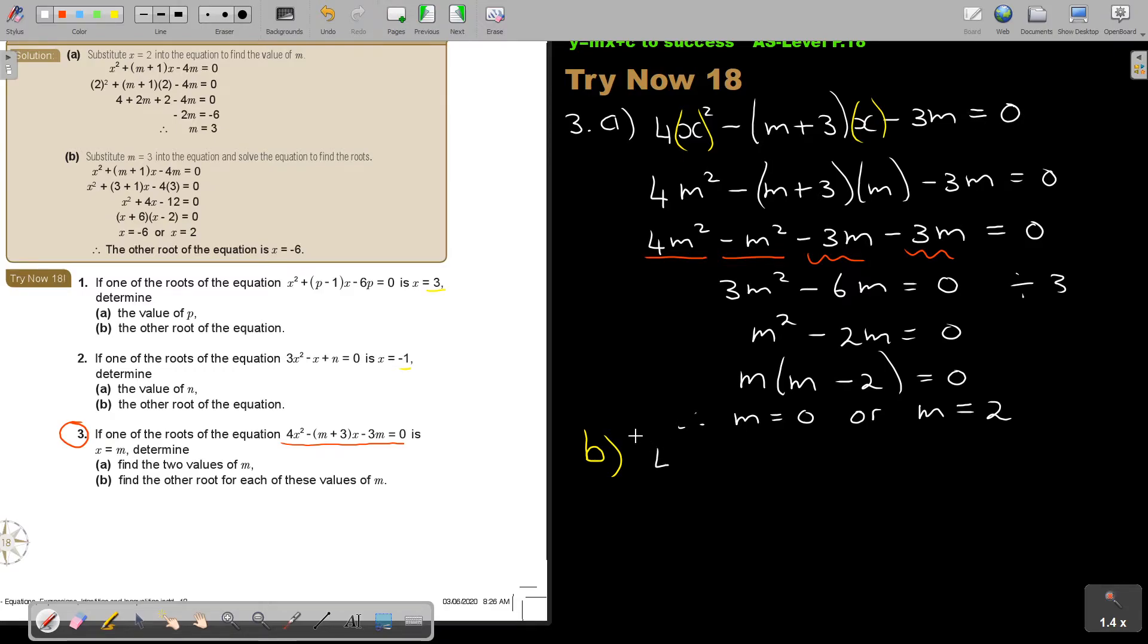So I'm just going to put in m now. So let's first put 0. So it's going to be 4 x squared minus 0 plus 3 x minus 3 times 0 is equal to 0. So 4 x squared minus 3 x and this is going to just be 0. So it's equal to 0. So I can again go and I take out x as a common factor. So it's going to be x times 4 x minus 3 equals 0. So therefore x is equal to 0 or 4 x equals to 3. So x is equal to 3 quarters. So if m equals 0 then this.